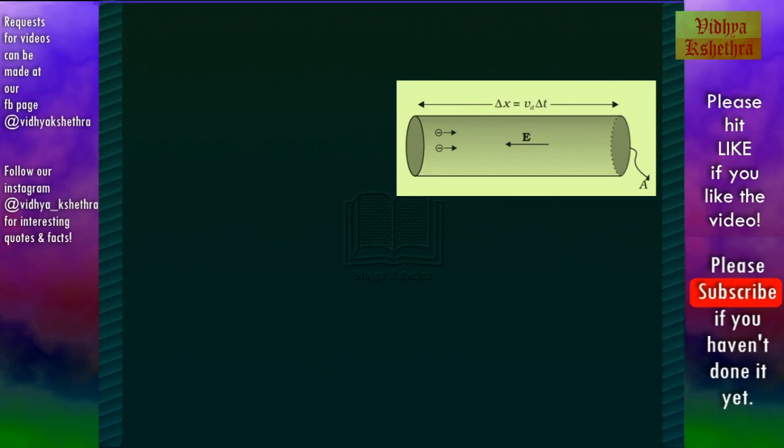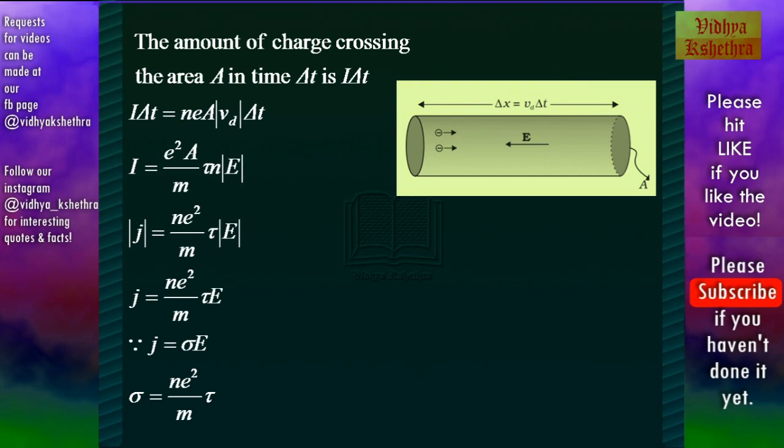Now let us consider that electrons pass through this A. That is electrons having a drift velocity Vd in small time interval Δt travels distance Δx to pass through A. So the amount of charge crossing the area A in time Δt is IΔt. Now IΔt = neAVdΔt, which is the number of free electrons times e the charge of the electron times A the area times drift velocity times Δt.